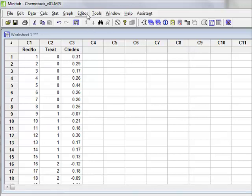Ultimately, we want to use an ANOVA to test whether the different levels of treatment have any significantly different effect on the chemotaxis index.